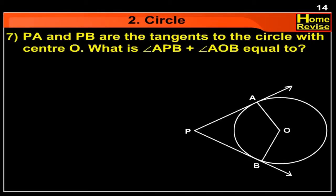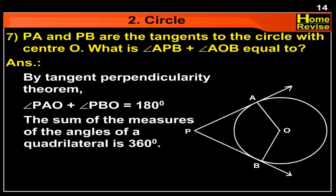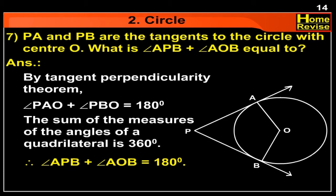PA and PB are the tangents to the circle with center O. What is angle APB plus angle AOB equal to? Answer: By the tangent perpendicularity theorem, angle PAO plus angle PBO is equal to 180 degrees. Since the sum of angles of a quadrilateral is 360 degrees, angle APB plus angle AOB is equal to 180 degrees.